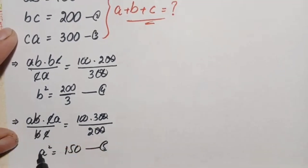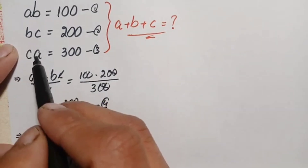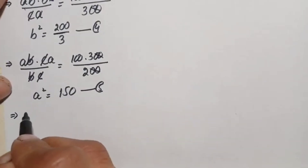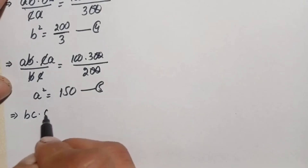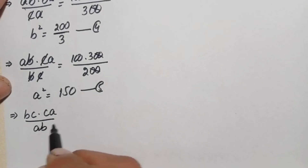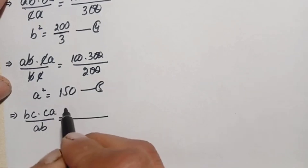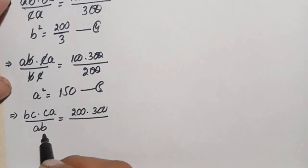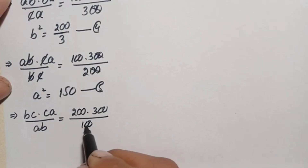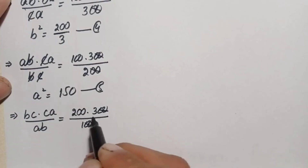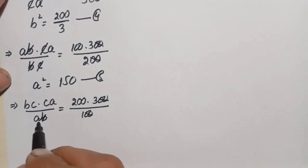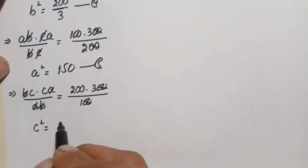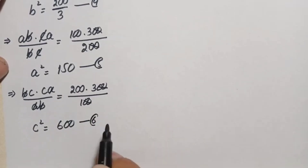To find c squared, we multiply equation two and equation three and divide the result by equation one. So b·c times c·a divided by a·b equals 200 times 300 divided by 100. We cancel the zeros, and cancel b with b and a with a, giving c squared equals 600. Let this be equation number six.